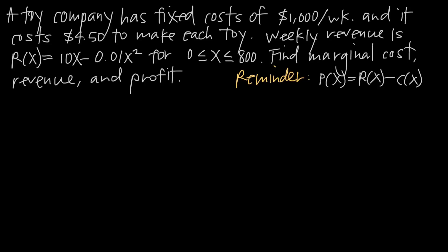In this video, we're talking about how to find marginal cost, marginal revenue, and marginal profit. Keep in mind that marginal cost, revenue, and profit represent the derivatives of cost, revenue, and profit respectively. So you can think about them as the rate of change of cost, revenue, and profit. If you find a function for marginal cost and plug in a certain value of x, the marginal cost function gives back the rate of change of cost — how fast cost is increasing or decreasing at that particular value of x.